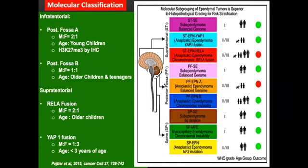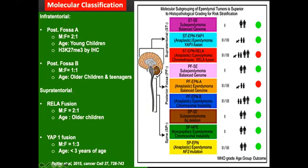Now we come to the heart of the presentation — molecular classification. Don't be confused; it's actually very simple. We all know ependymoma can be infratentorial or supratentorial. For now, let's focus on infratentorial, as 75% of ependymomas arise here. Under infratentorial, we have two terms: PFA (posterior fossa A) and PFB (posterior fossa B).